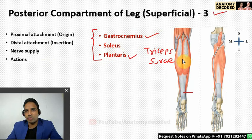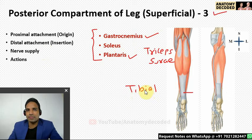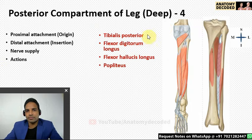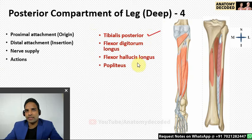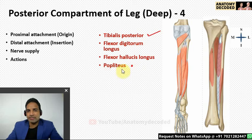The nerve supply of all three superficial muscles and the four deep muscles of the posterior compartment is by the tibial nerve. Their action is plantar flexion at the ankle joint. The deep group of four muscles can be compared with the anterior compartment: tibialis posterior corresponds to tibialis anterior, and flexor digitorum longus and flexor hallucis longus correspond to their extensor counterparts. Popliteus is the additional muscle in this group.